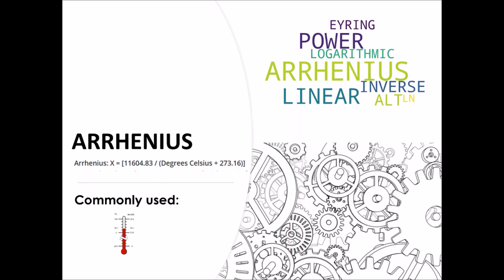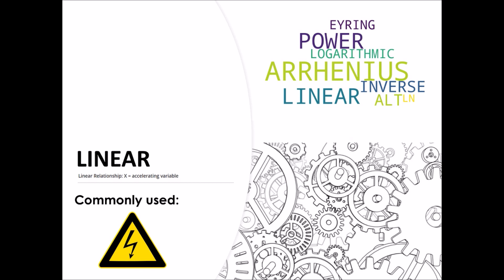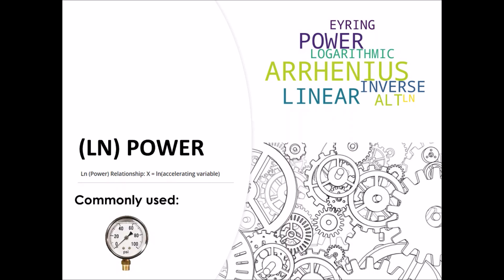One of the most common is the Arrhenius model, which is commonly used when the accelerating factor is temperature. There is also the inverse temperature model, which is an alternative to Arrhenius when the accelerating factor is temperature. Another option is the linear model, commonly used with voltage. And finally there is the natural logarithmic model, which is commonly used for compression or tension.